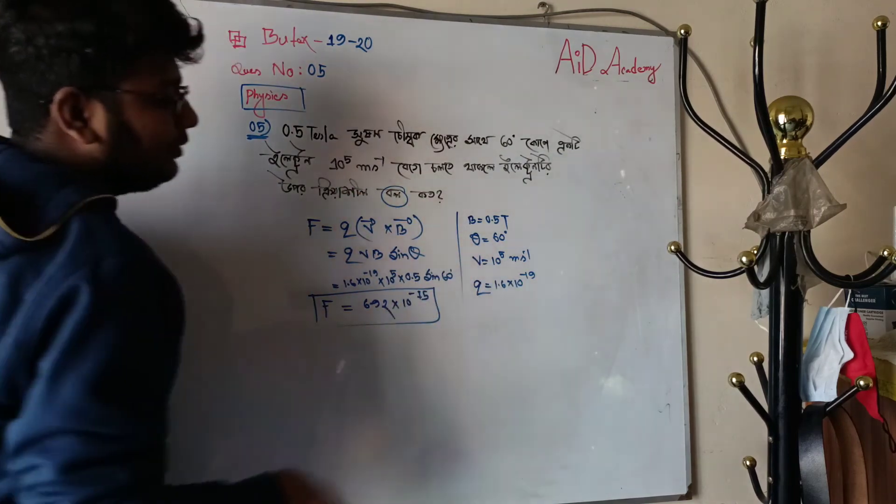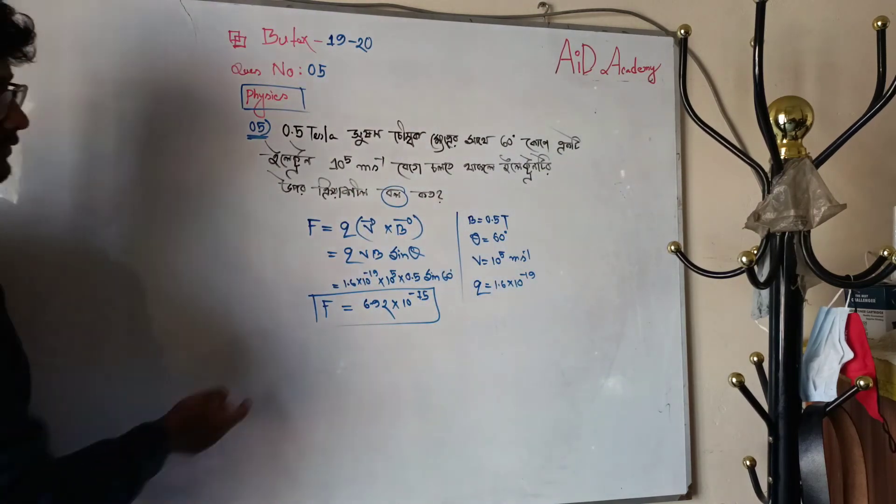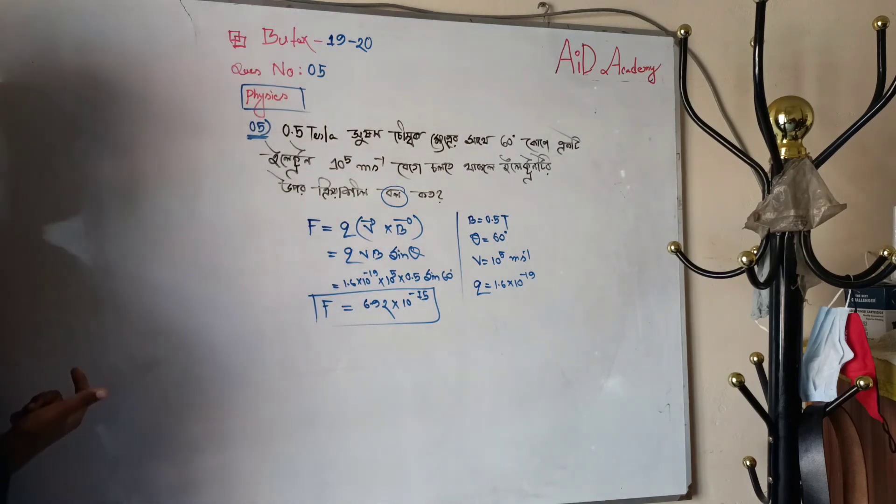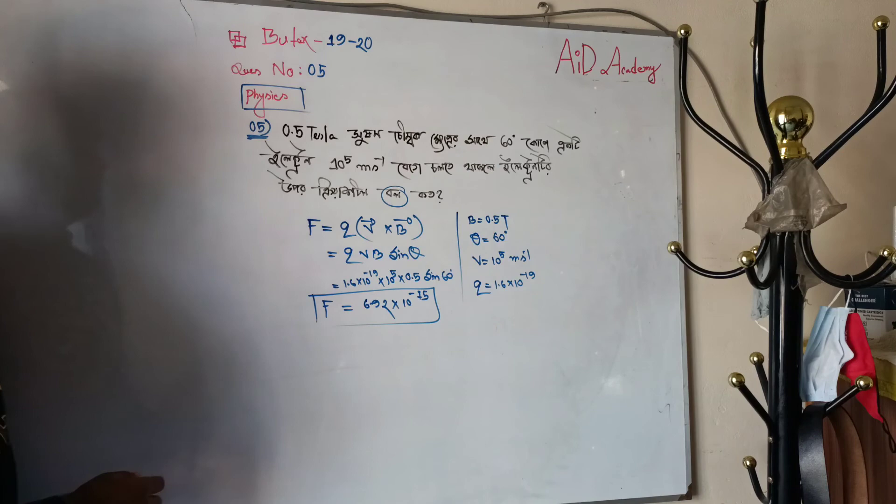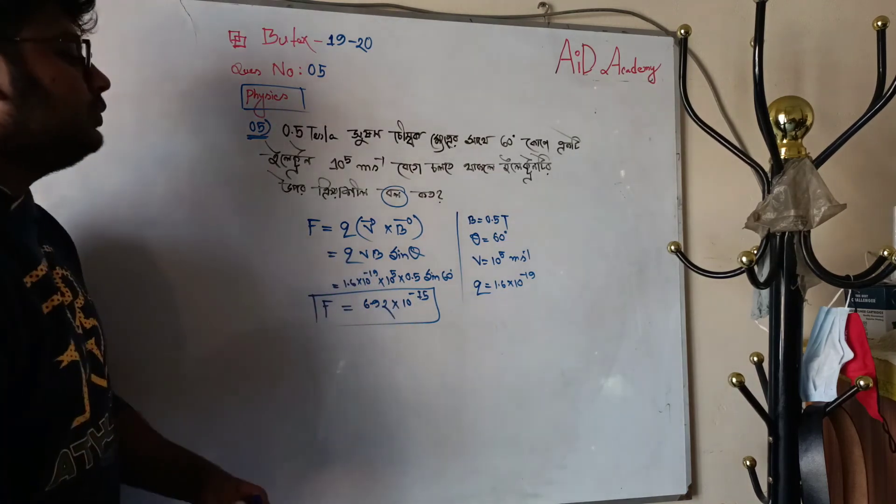The charge is 1.6 into 10 to the power minus 10. This is fixed by 2.5 times at the bottom here. The ball is 0.5 times at the bottom here. The bar is 6.9 into 10 to the power minus 15.